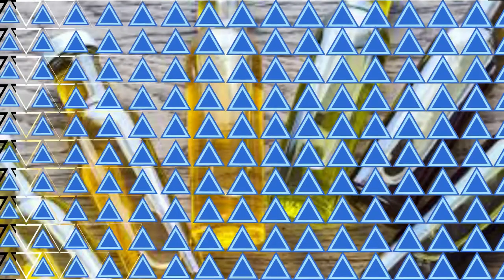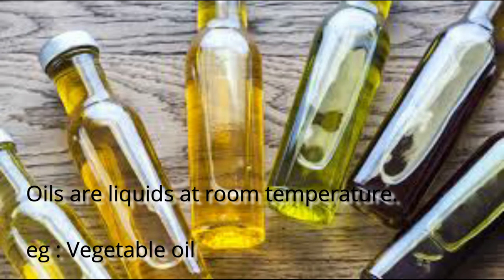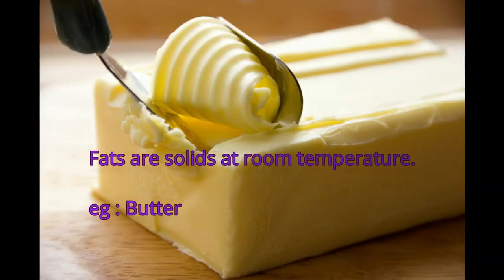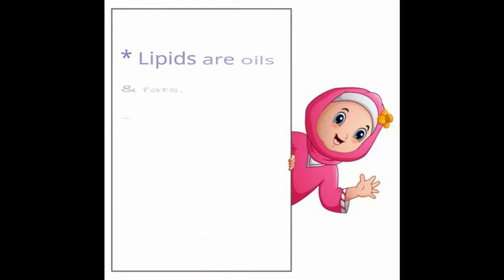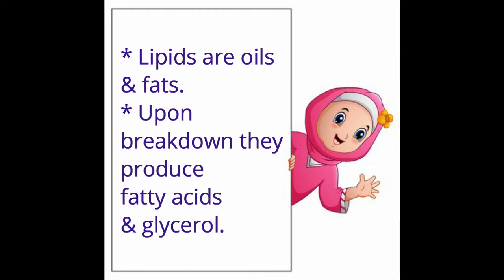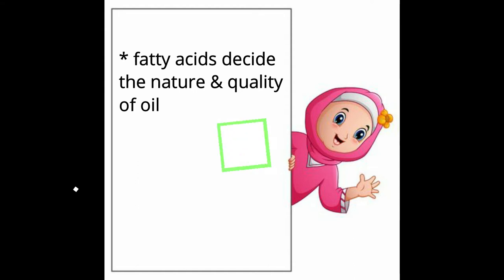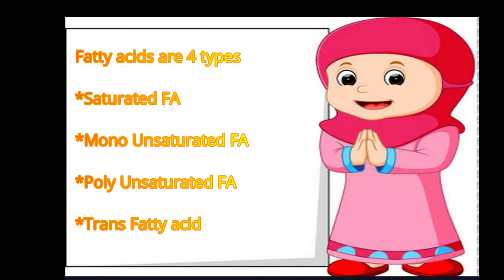Oils versus fats: oils are liquids at room temperature, for example vegetable oils, while fats are solid at room temperature, for example butter. Lipids are a combination of oils and fats. Upon breakdown they produce fatty acids and glycerols. The fatty acids decide the nature and quality of the oil. There are four main types of fatty acids: saturated fatty acids, monounsaturated fatty acids, polyunsaturated fatty acids, and trans fatty acids.